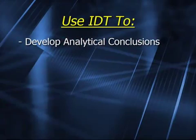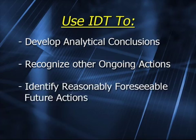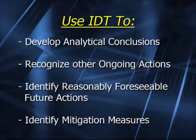In doing your effects analysis, use your interdisciplinary team to develop your analytical conclusions regarding the issues. Your interdisciplinary team has good insight and can recognize other ongoing actions that may be affecting the same resources. They can also be helpful in identifying reasonably foreseeable future actions, including the actions of other landowners — even private landowners — or federal agencies. Lastly, an ID team can be helpful in identifying any mitigation measures that would reduce the impacts described. You will need to explain how mitigation measures would be effective in reducing or avoiding impacts, and describe any residual adverse effects that would remain after mitigation is applied.